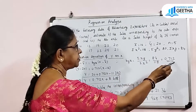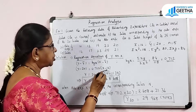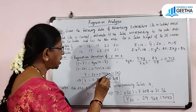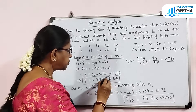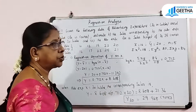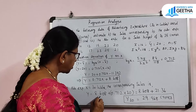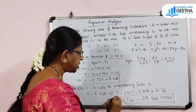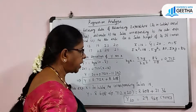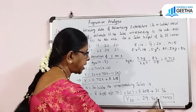byx equals summation xy divided by summation x-squared, which is 84 divided by 118, equal to 0.712. The regression equation of y on x: y minus y-bar (20) equals 0.712 times (x minus x-bar 16). So y equals 0.712x minus 11.392 plus 20, giving y equals 0.712x plus 8.608. Now substituting x equals 30 lakhs: y equals 8.608 plus 0.712 times 30 equals 8.608 plus 21.36 equals 29.968 crores. So the sales corresponding to advertising expenditure of Rs. 30 lakhs is Rs. 29.968 crores.